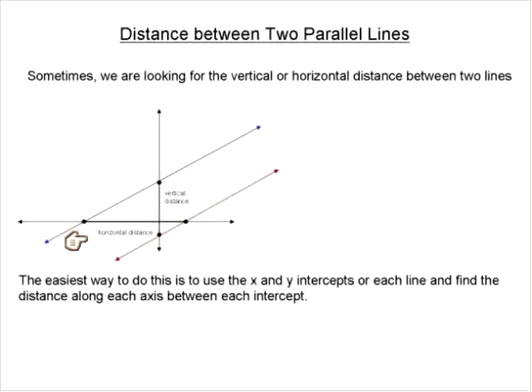At any point along these parallel lines, I could draw in a horizontal line — from here to here, or from here to here. But the easiest one is the horizontal line that goes from the intercept of one to the intercept of the other. You can use the x and y intercepts to find the distance.